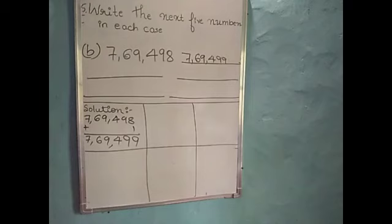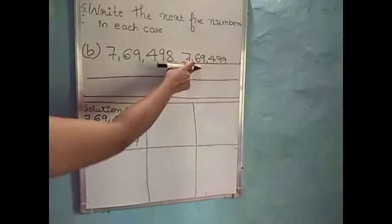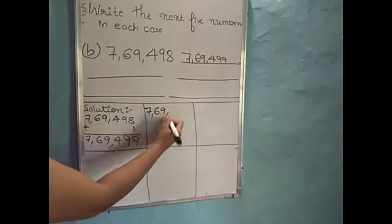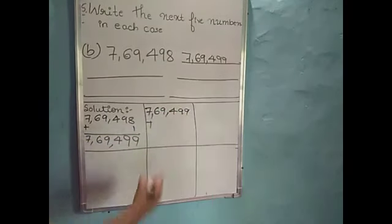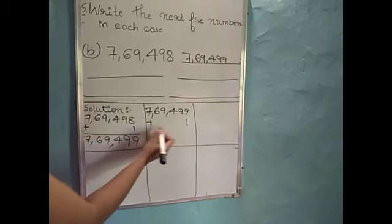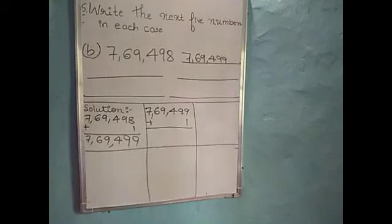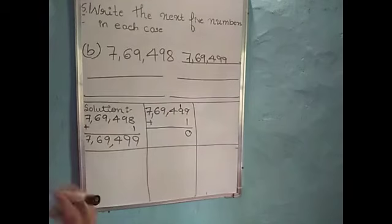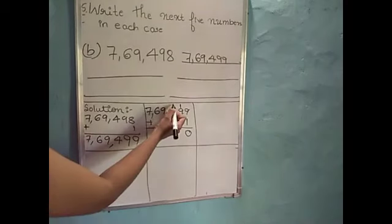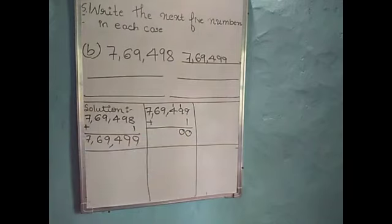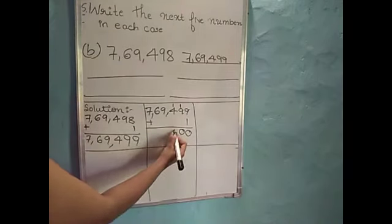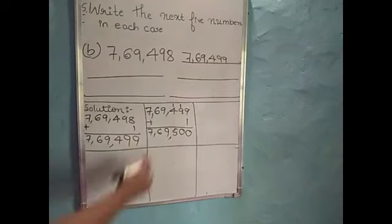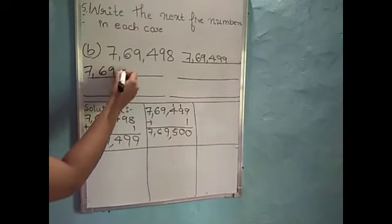We should add 1 to this number to get the next number. So I will write here 7,69,499. After that I will add 1: 9 plus 1 is 10 — carry 1 and write 0 here. Then 1 plus 9 is again 10 — again carry 1 and write 0 here. Then 1 plus 4 is 5. Write remaining numbers as it is: 9, 6 and 7. So the next number is 7,69,500.